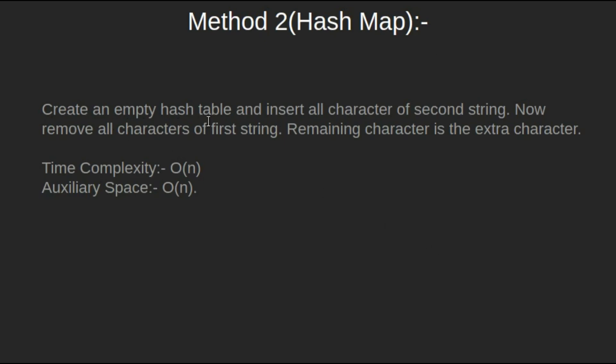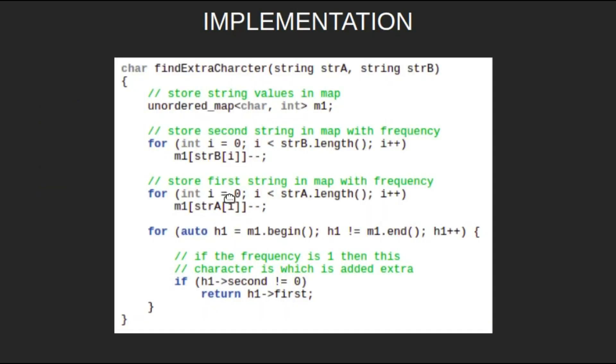Create an empty hash table and insert all characters of the second string. Now remove all characters of the first string from the hash map. The remaining character is the extra character. The time complexity is O of n and auxiliary space needed is O of n. This is the implementation using the hash map.